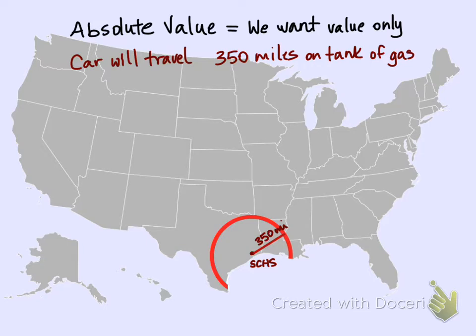If you go to the east or to the right side of the graph, you're going to end up in Louisiana somewhere. If you go to the left of the graph or to the west, you're going to end up in Texas somewhere. But in both of these directions, you've driven 350 miles, and as soon as you drive that 350 miles, you're out of gas. So your car doesn't care what direction you go — it only cares how far you went. Well, that's absolute value.